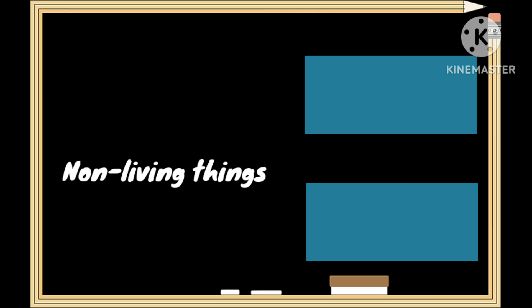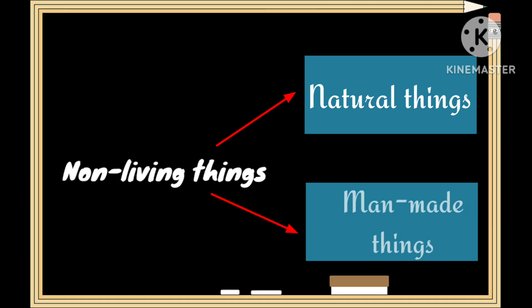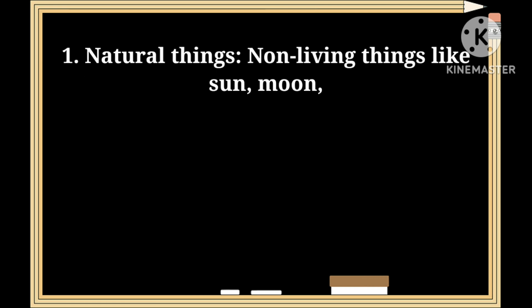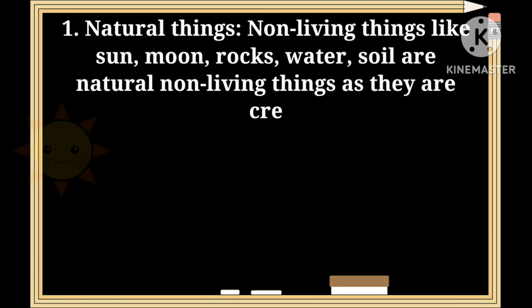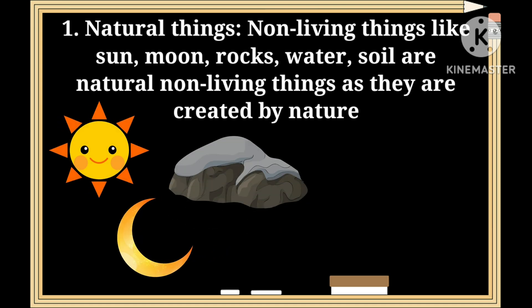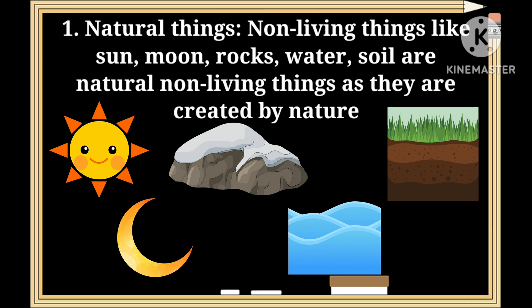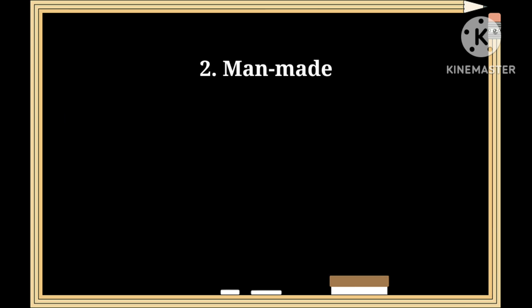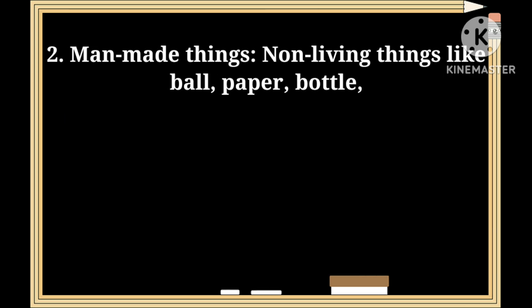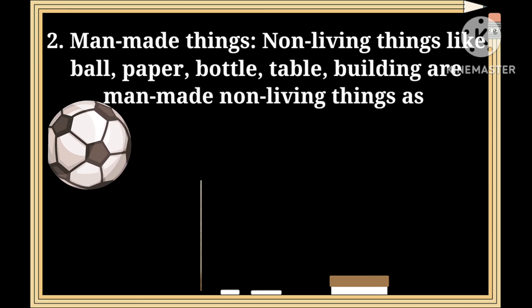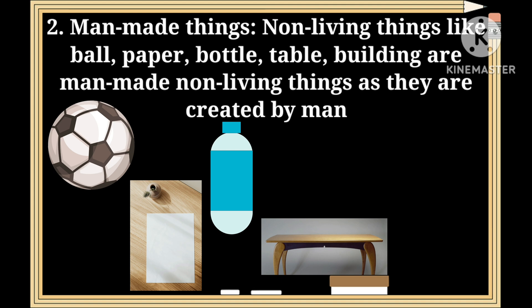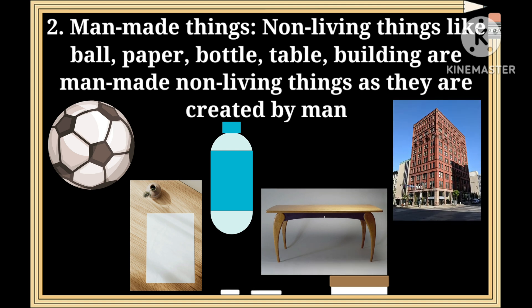Non-living things are divided into two categories: number one, natural things, and number two, man-made things. Natural non-living things like the sun, moon, rocks, water, and soil are created by nature. Man-made non-living things like balls, paper, bottles, tables, and buildings are created by human beings.